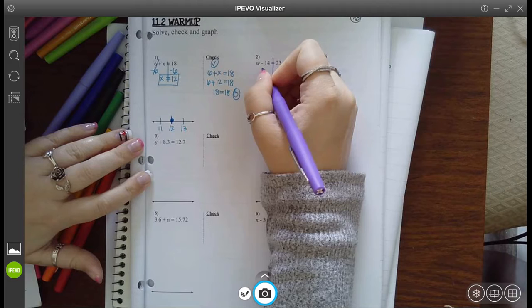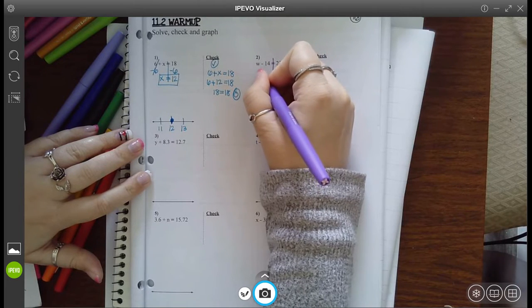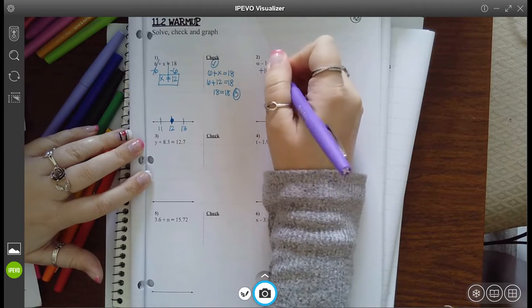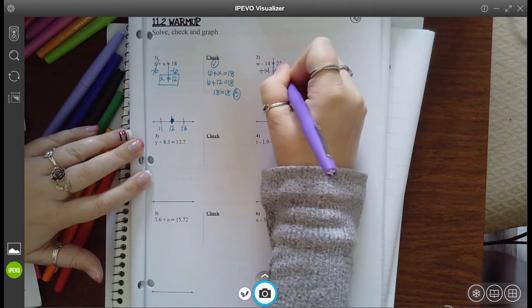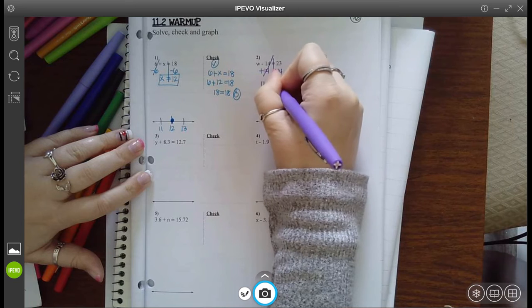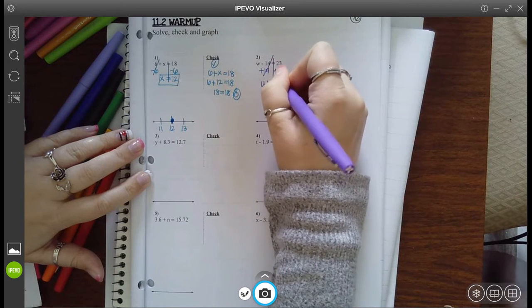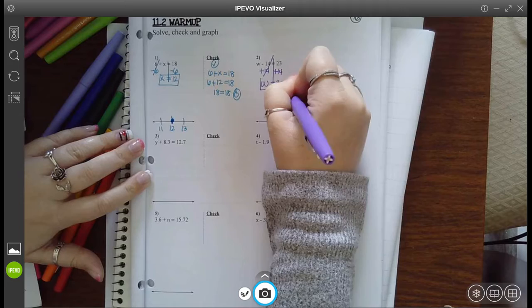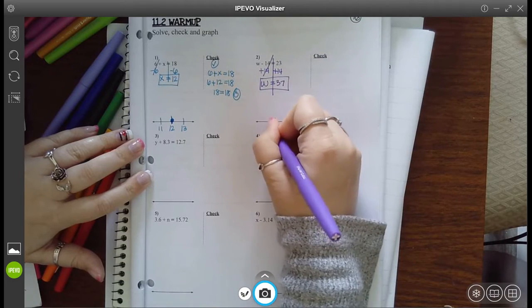I want to get w by itself, so the inverse of subtracting 14 is to add 14. Whatever you do to one side, do the other. Now 14 minus 14 is 0, so w is by itself. And 3 plus 4 is 7, 2 plus 1 is 3. So I think the answer is 37.